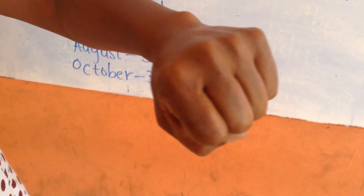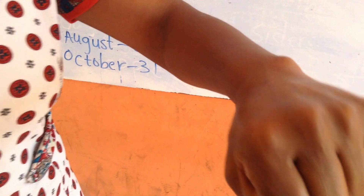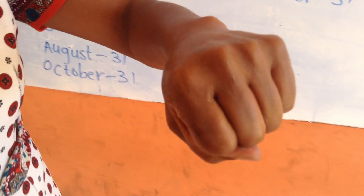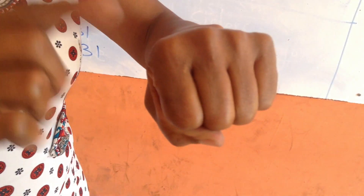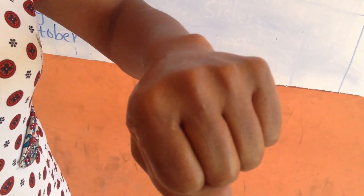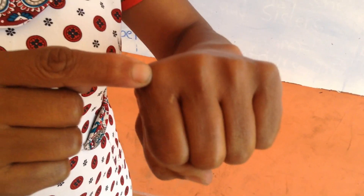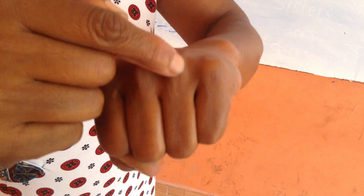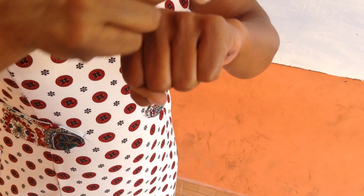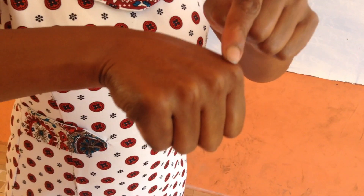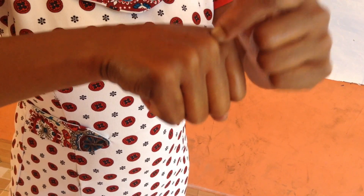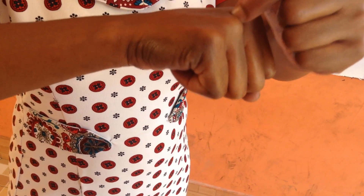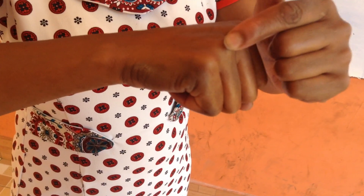I'm going to teach you how to identify the 30-day and 31-day months using your hand, so you can try this at home. All the months with 31 days go up. We start: January, February, March, April, May, June, July, August, September, October, November and December.